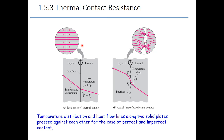As you can see in this first figure, this is an ideal situation — meaning we are not considering any imperfect surface contact between those two layers. In that case, no temperature drop is considered, so the temperature at the interface: T1 equals T2. That is the ideal, or perfect condition, which we always assumed in our previous analysis.